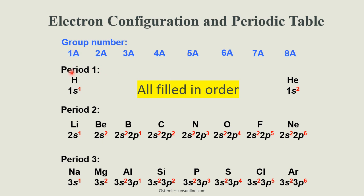In group 1: period 1 is 1s1, period 2 is 2s1, period 3 is 3s1. Similarly for the second group: 2s2, 3s2. Only the principal energy level is increasing, but the orbital stays the same. The number of valence electrons stays the same.